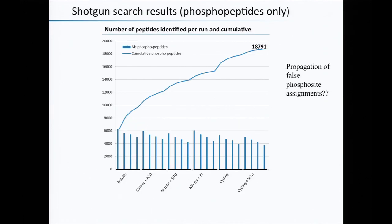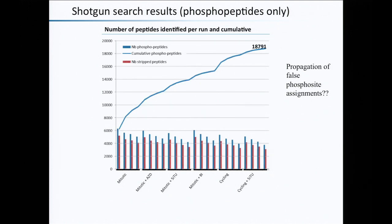Plotting the results: roughly 5,000 to 6,000 phosphopeptides were identified per sample. The accumulation plot of distinct phosphopeptides seen across the 24 samples continuously and steadily rises — which is concerning. If we are sequencing peptides from similar samples, why do we continuously discover new phosphorylated peptides? Much of the data analysis was done by Ludwig Schieh.